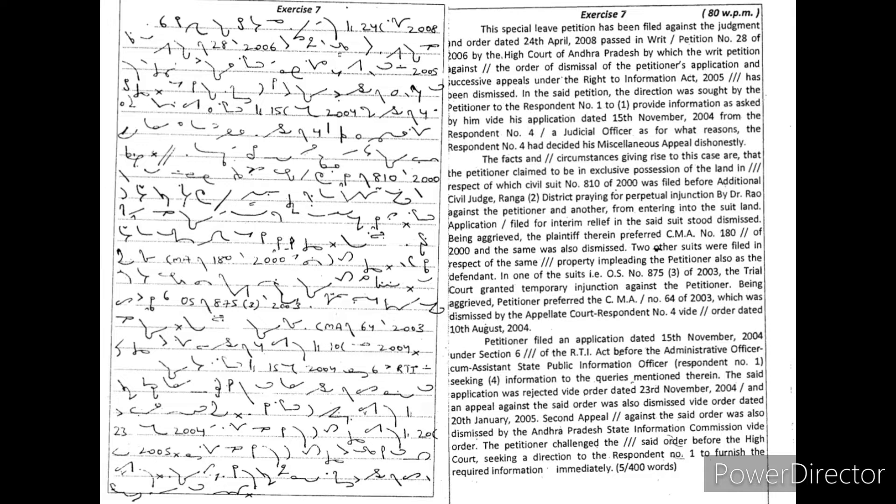writ petition against the order of dismissal of the petitioner's application and successive appeals under the Right to Information Act 2005 has been dismissed. In the said petition the direction was sought by the petitioner to the Respondent No. 1 to provide information as asked by him while his application dated 15th November 2004 from the Respondent No. 4, a judicial officer, as for what reasons the Respondent No.